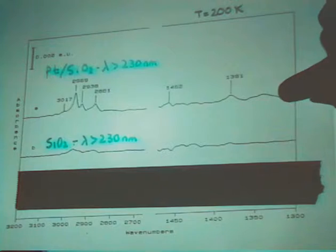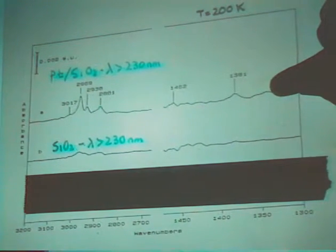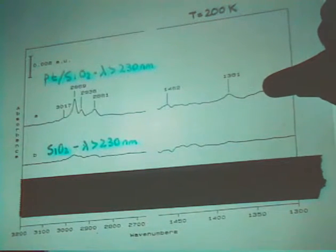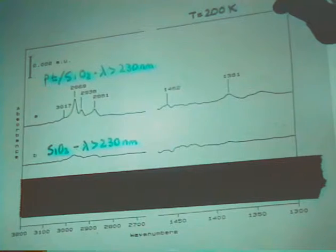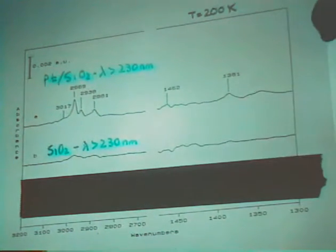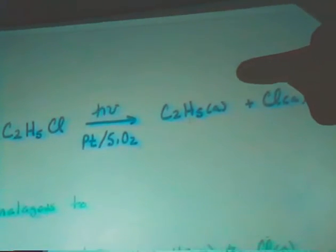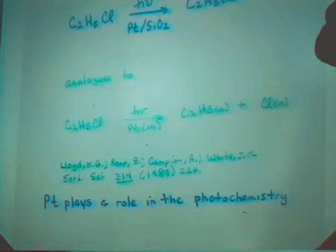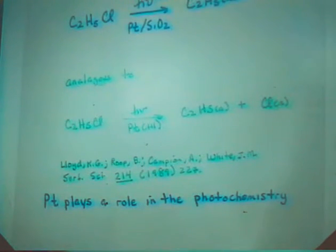This is the spectrum obtained after 180 minutes of photolysis in the presence of gas phase ethyl chloride, and we've evacuated out the sample to remove the weakly bound ethyl chloride. We see these bands on the platinum silica side, and on the silica side, we don't see much happening at these wavelengths after three hours of photolysis. So it looks like, analogous to the single crystal work, we see C-Cl bond cleavage to give ethyl groups and chlorine atoms on the platinum silica surface. We're doing surface photochemistry on these nanometer-sized platinum particles, and that platinum is playing a role in the photochemistry because ethyl chloride is transparent at these wavelengths.